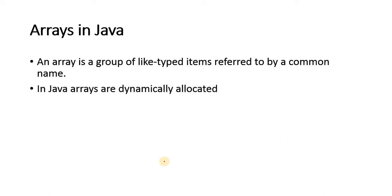The big difference is that in Java, arrays are always dynamically allocated. In case of C, arrays can be stored on the stack, but in case of Java, arrays will always be stored on the heap — the memory for arrays will always be allocated on the heap.